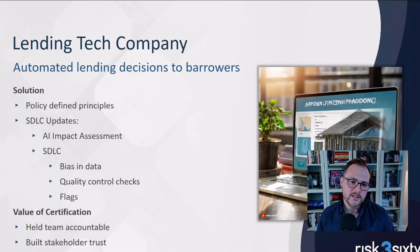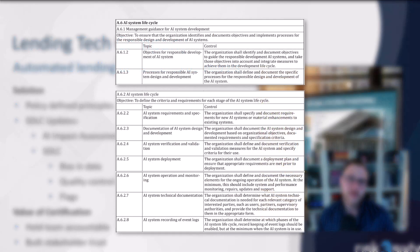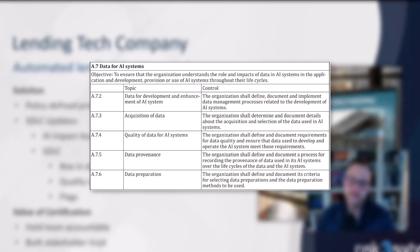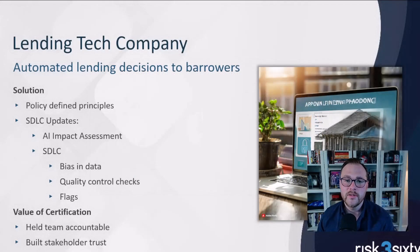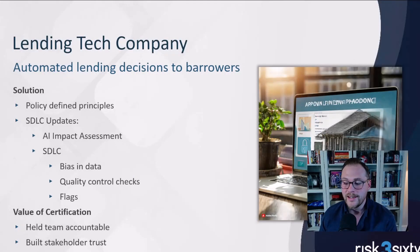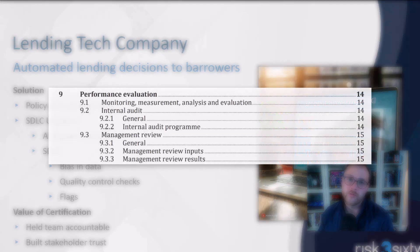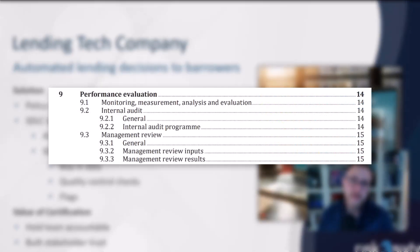They revamped their whole SDLC, thinking about data inputs and data training. They put in new quality control processes and extensive testing to make sure the training data was sound. They also built in flags — if results were outside a certain range, it would be flagged for manual review to determine if it was a bad decision driven by the data. They implemented internal audits to look across their entire portfolio and verify there weren't biased decisions being made, and to catch and correct those issues.